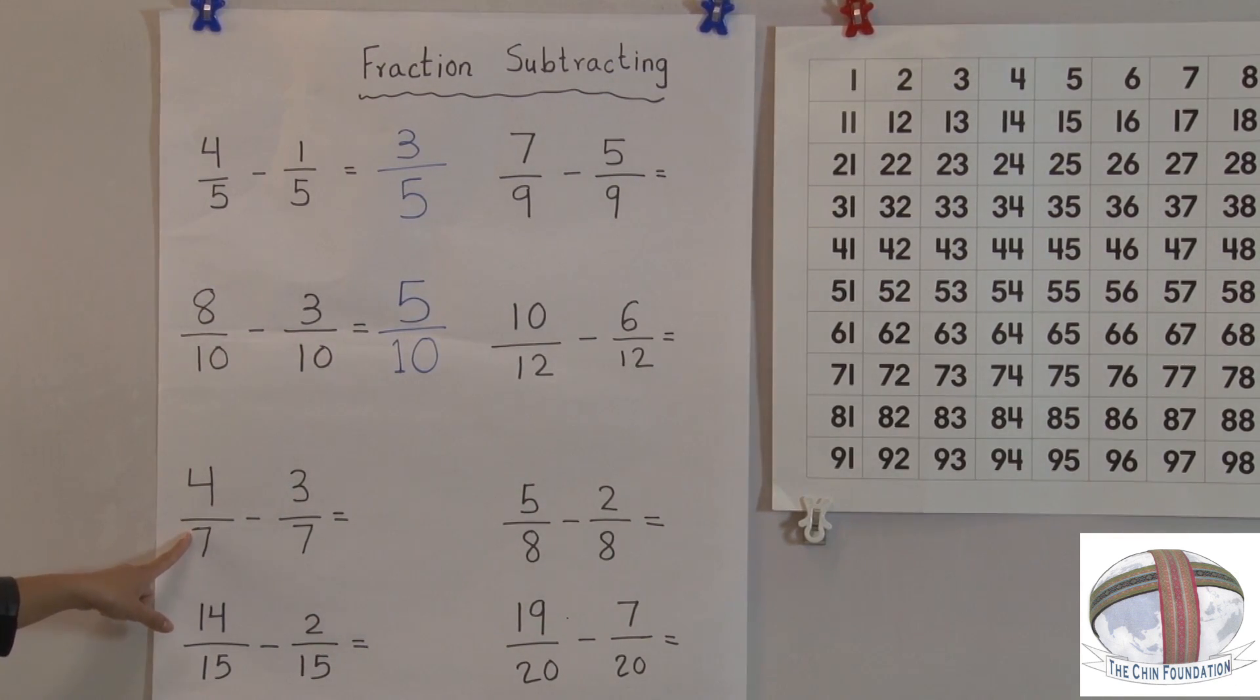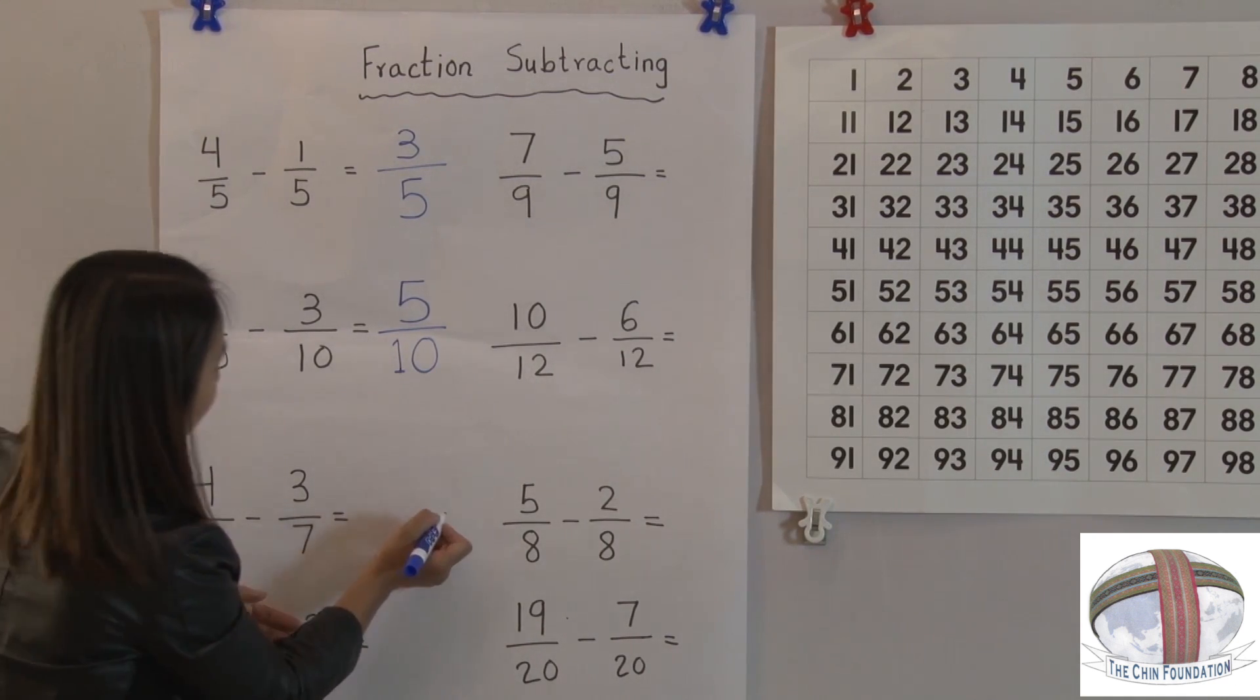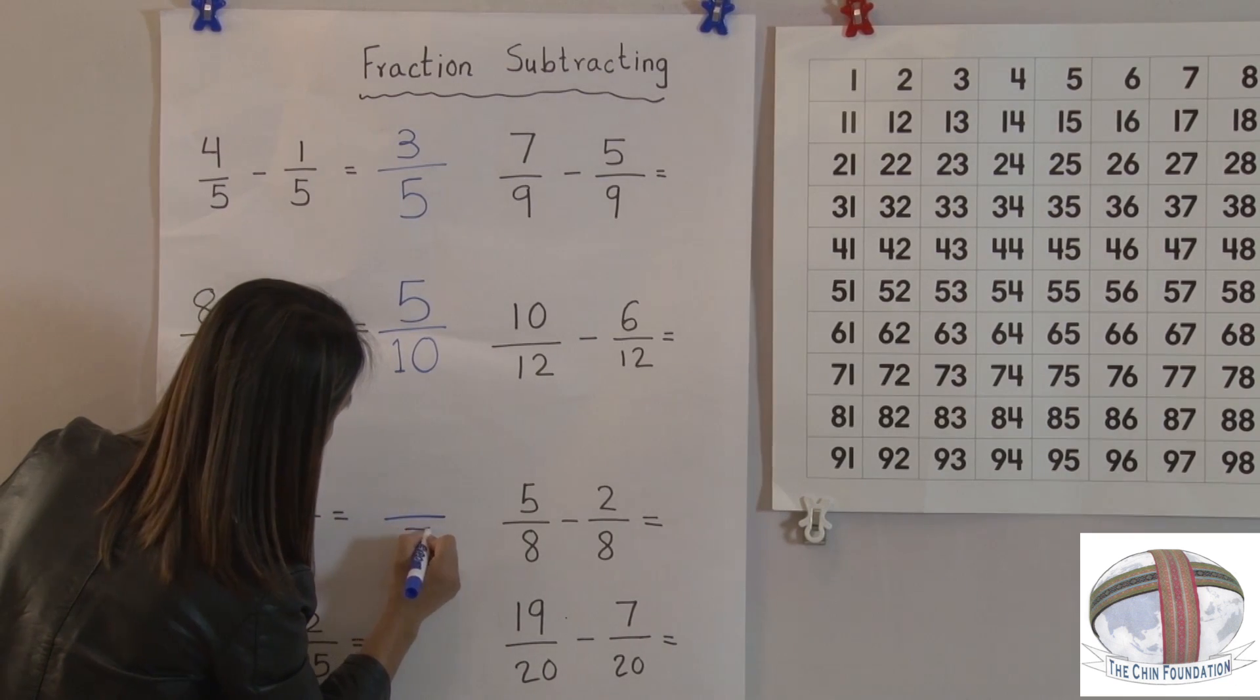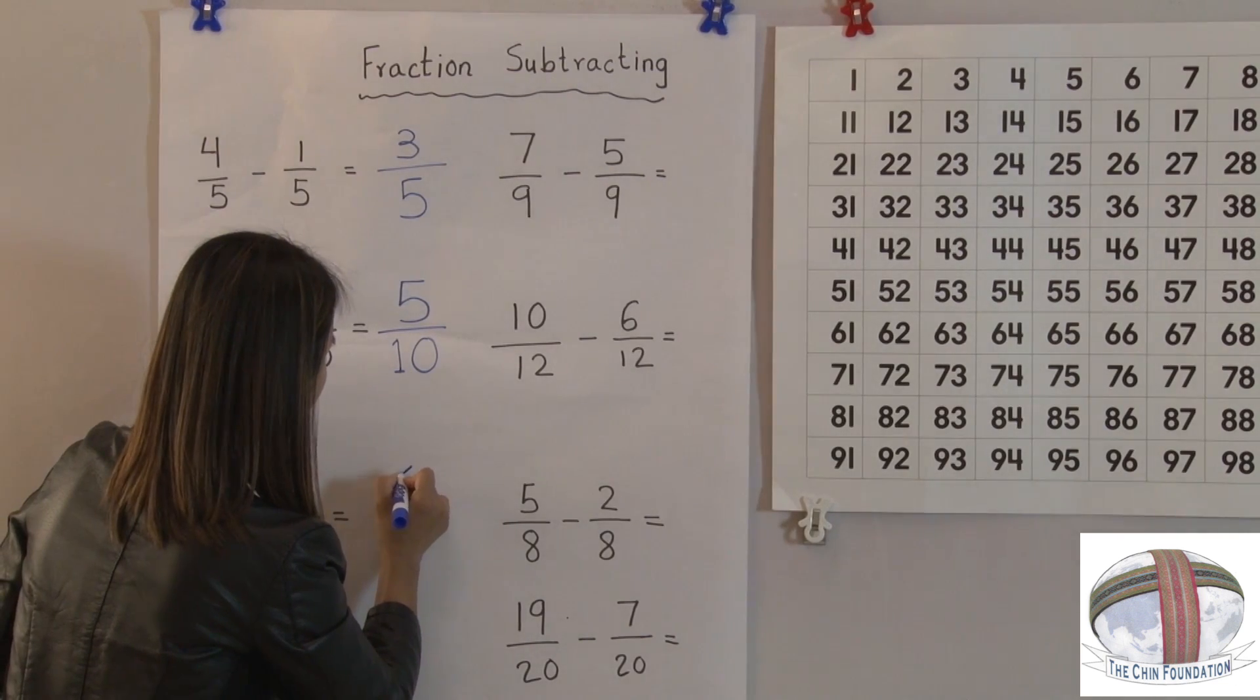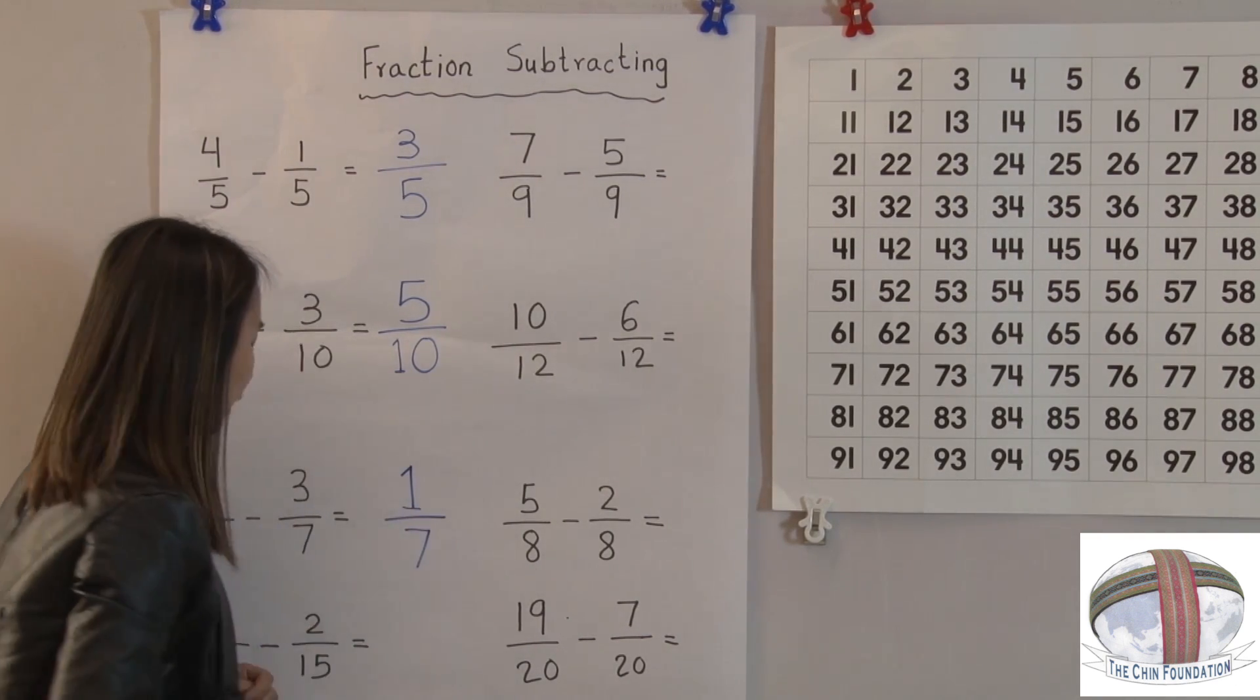Let's look at the next one. We have the same denominator, so we just need to write 7. We need to take away 4, take away 3. 4 minus 3. 4 take away 3, which is 1, 2, 3. So only one left.